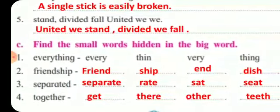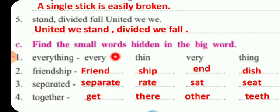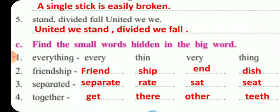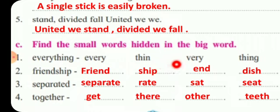Now we will see question number C: Find the small words hidden in the big words. Here the word given is 'everything.' You have to find the small words hidden in that big word. The first word is 'every,' then 'thin' (T-H-I-N), then 'very' (V-E-R-Y), and 'thing' (T-H-I-N-G). This is the way we write smaller words from the big word.